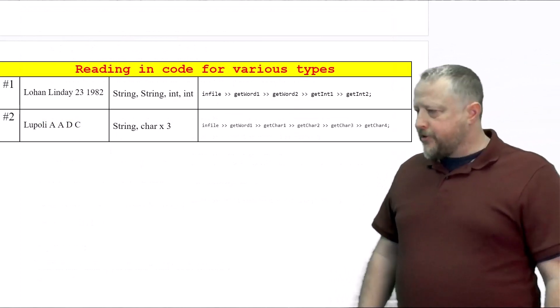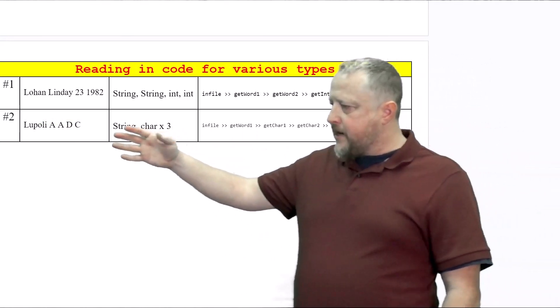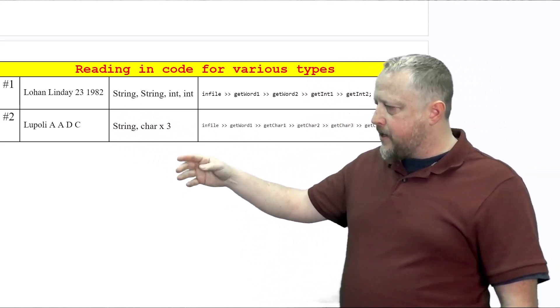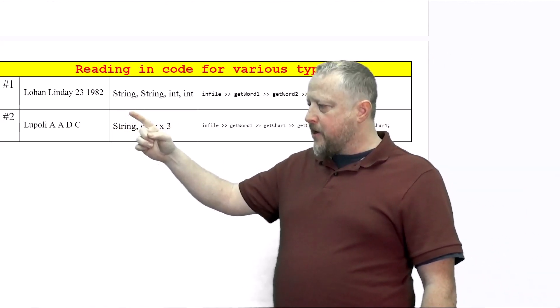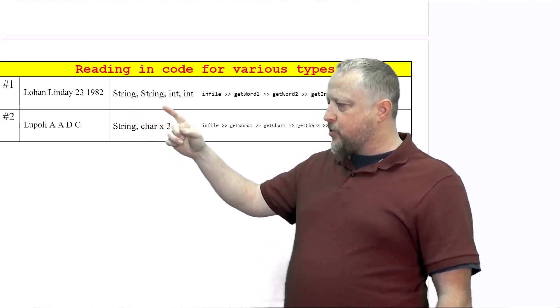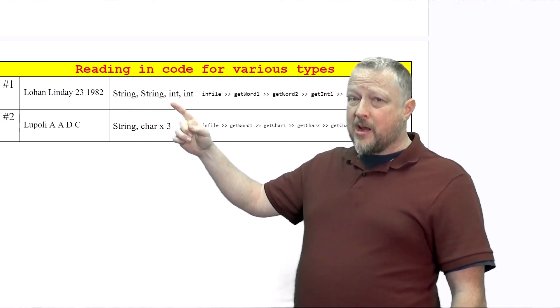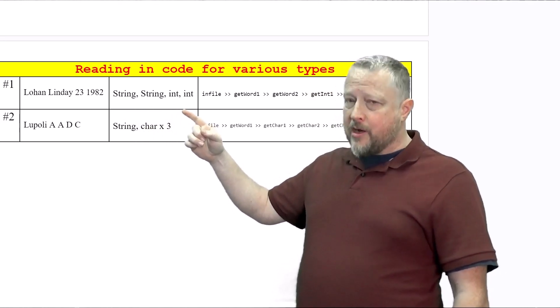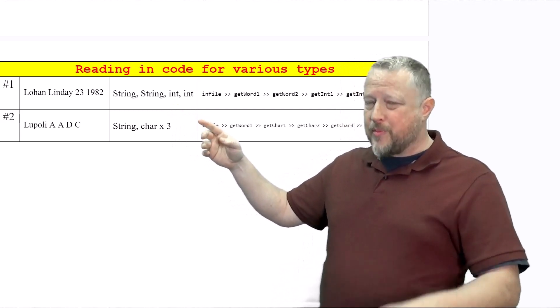So here's your two solutions here. We know what the data is, Lindsay Lohan, 23, 1982. So Lohan's going to be a string, Lindsay's going to be a string, 23 is an integer. To be honest with you, it should probably be unsigned integer. Another integer for this one, again, unsigned probably would be a better pick.